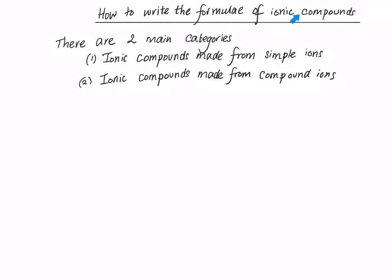How to write the formula of ionic compounds. Remember, an ionic compound is a compound that's made from a metal and a non-metal reacting together. The metal gives away electrons to get a full outer shell and the non-metal gains electrons to get a full outer shell.